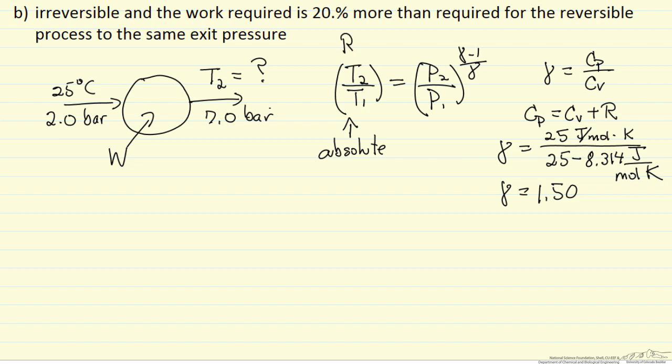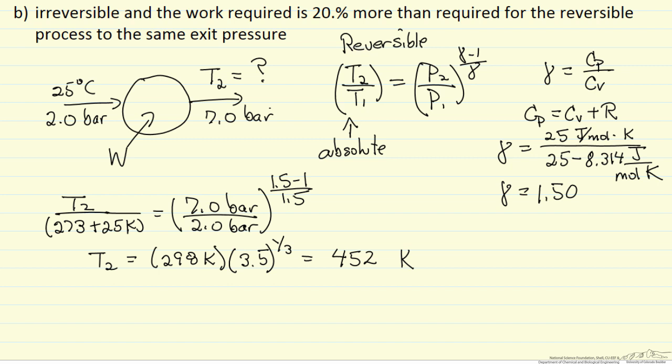This equation, remember, is only true for a reversible expansion or compression. So if we have all the information now, the only thing we are left to do is calculate the temperature where the inlet temperature is 273 plus 25 to convert it to Kelvin, 7 bar is outlet and 2 bar is the inlet, and then gamma is 1.5, so gamma minus 1 over gamma. We calculate a temperature of 452 Kelvin leaving the reactor. This is the reversible compression, remember this is ideal gas. The temperature is increased from 298 to 452 Kelvin because we are putting work into the system, and that work is going to heat up the gas.